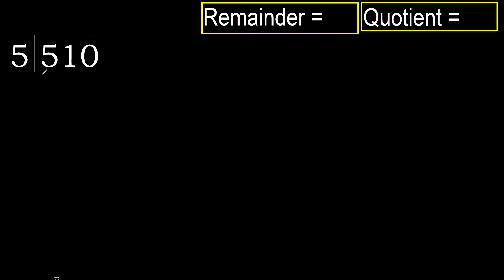510 divided by 5. 5 is not less, therefore work with 5. 5 multiplied by which number is nearest to 5, but not greater?